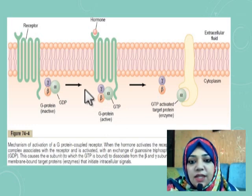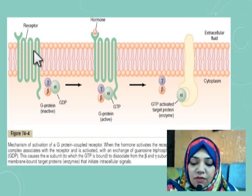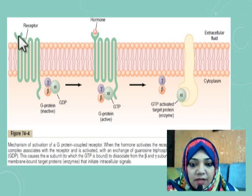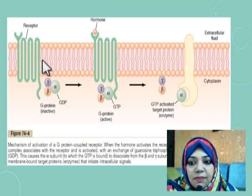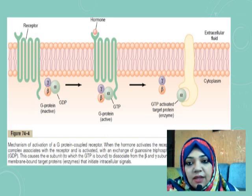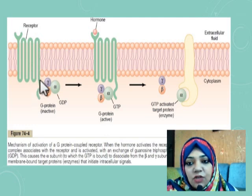Here we can see a membrane receptor. We know that protein hormones have their receptors in or on the surface of the cell membrane. This receptor has three parts: one is the extracellular part, then the transmembrane part that is embedded in the cell membrane, and the intracellular or cytoplasmic part. The extracellular part binds with the hormone, and the transmembrane part has seven loops spanning the membrane, anchoring the receptor to the cell membrane.